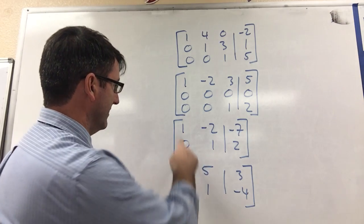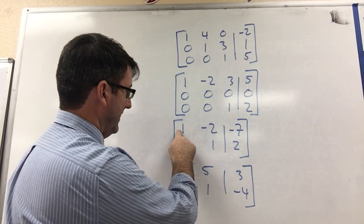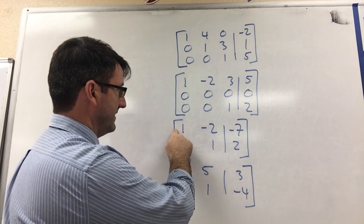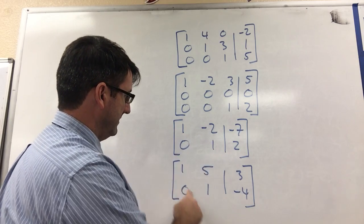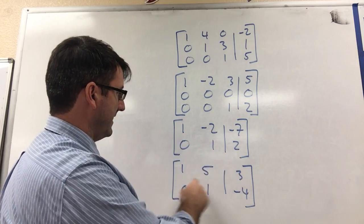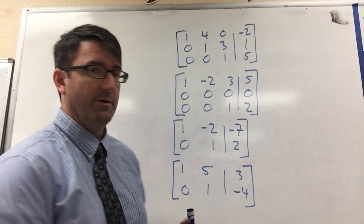And the same thing is happening down here. We've got leading ones farther to the left on the higher row. You end up with this little diagonal of ones and then zero down in the corner.